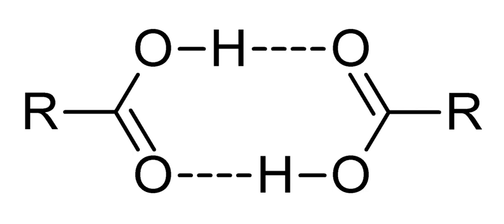Noncovalent dimers: Carboxylic acids form dimers by hydrogen bonding of the acidic hydrogen and the carbonyl oxygen when anhydrous. For example, acetic acid forms a dimer in the gas phase, where the monomer units are held together by hydrogen bonds. Under special conditions, most O-containing molecules form dimers, e.g. the water dimer.